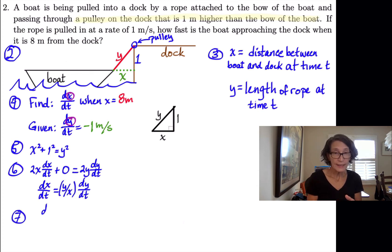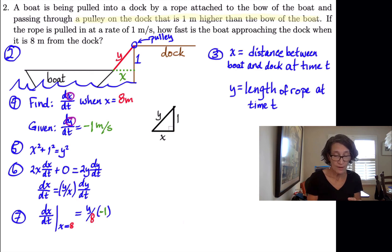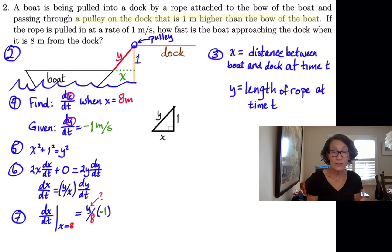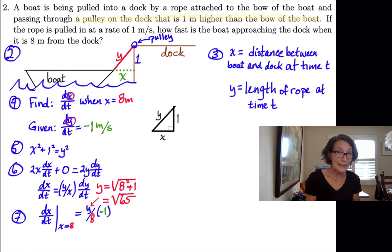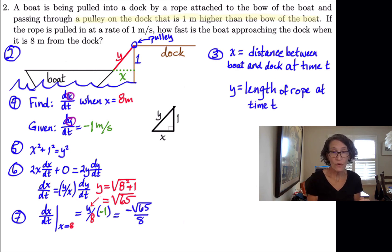We're looking for dx/dt at the moment when x is 8 meters. Solving for dx/dt, we get dx/dt = (y/x) · dy/dt. Step seven is when we plug in. We plug in 8 for x and negative 1 for dy/dt. We still have y in there — but using the Pythagorean theorem when x is 8, y is the square root of 8² + 1, which is the square root of 65. So we get negative √65 over 8.